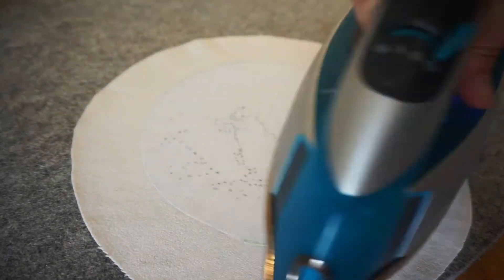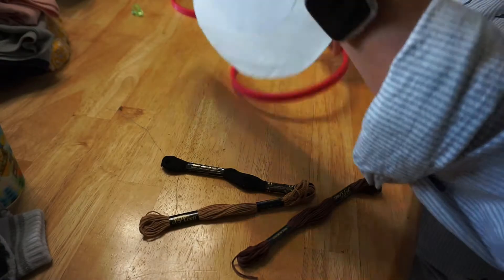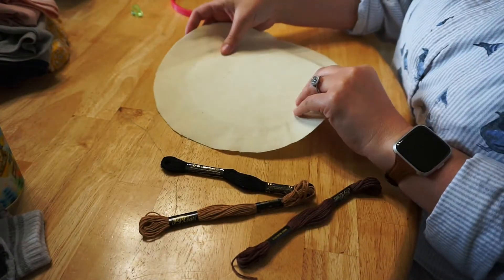Flip it over and you iron it onto your fabric. Once this is done you put your fabric on your embroidery hoop.